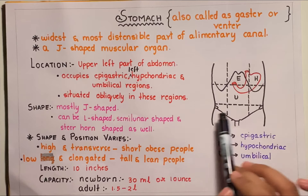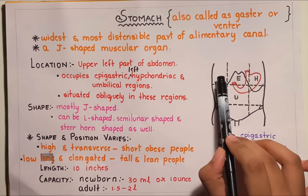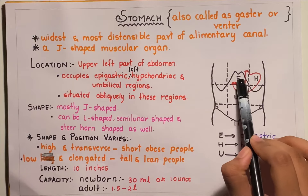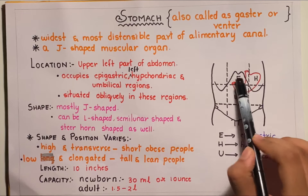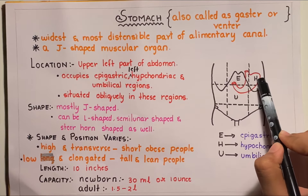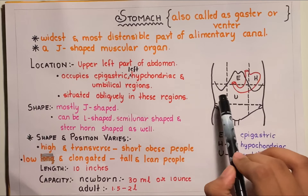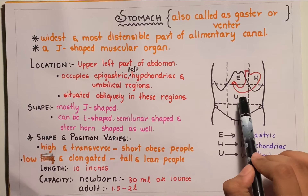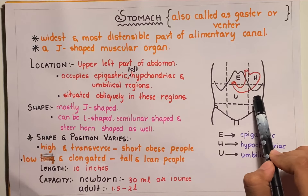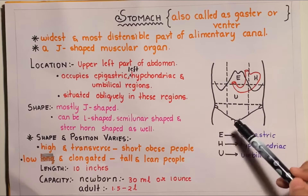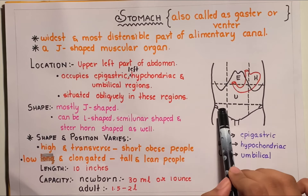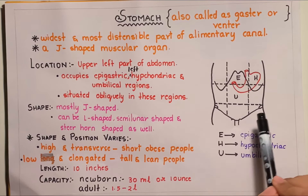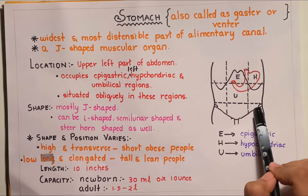The nine regions are: the right hypochondriac region, the epigastric region, the left hypochondriac region, the right lumbar region, the umbilical region, the left lumbar region, the right iliac fossa, the hypogastric region, and the left iliac fossa.